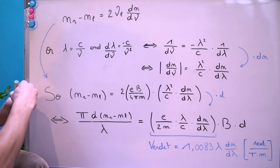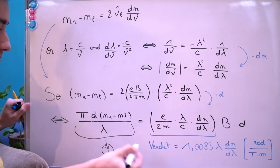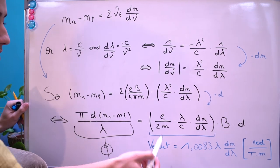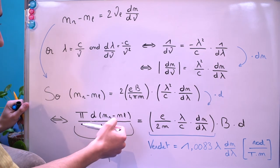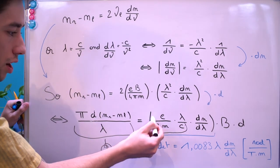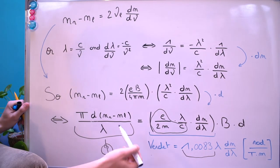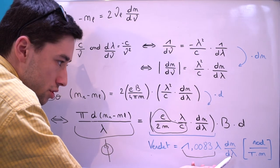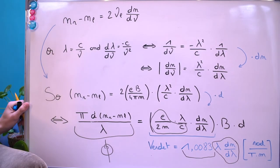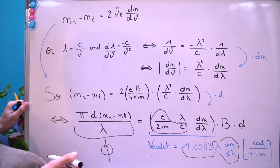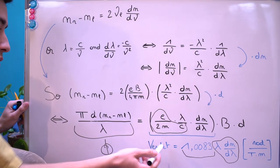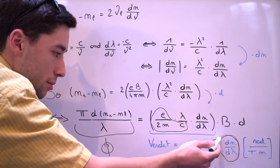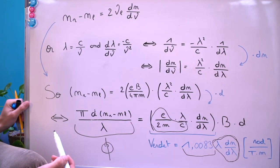In Becquerel's formula, we have our rotation angle, our magnetic field, and the length of the material. The remaining term is our Verdet constant. All those constituent terms are constant and combine to give it. The Verdet constant can be influenced by the wavelength and the variation of the refractive index with wavelength through the material. So now you know how Becquerel's formula is derived and why, and how the Verdet constant is defined and how it may be influenced by parameters such as wavelength and the dispersion of the material.